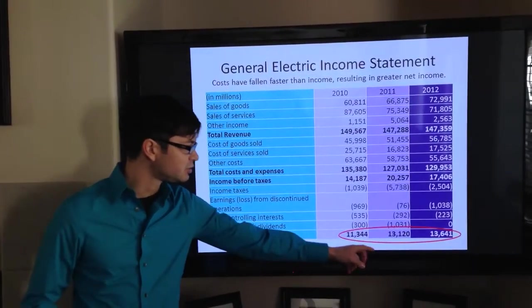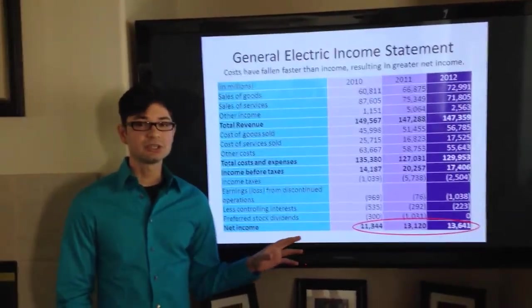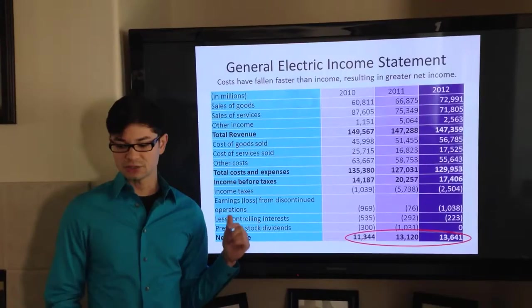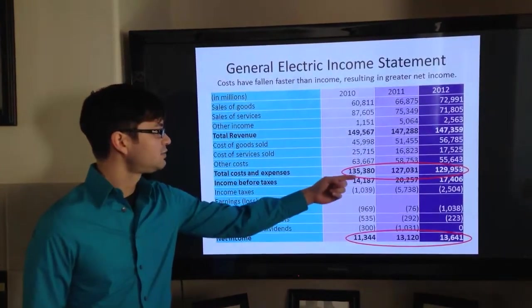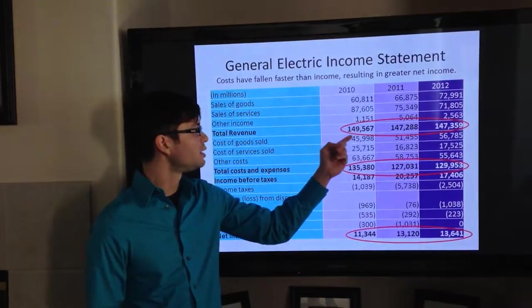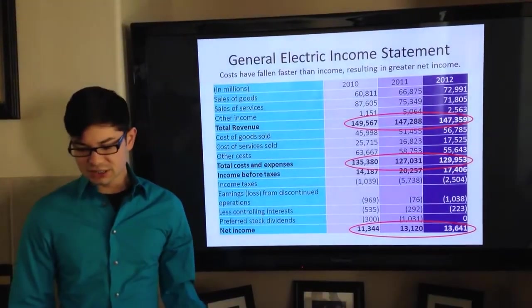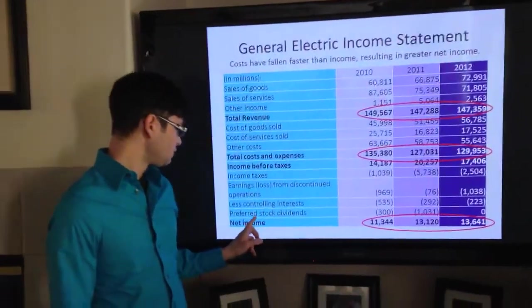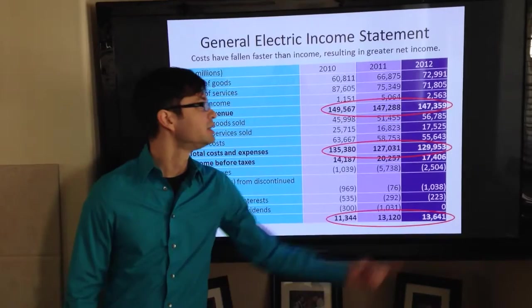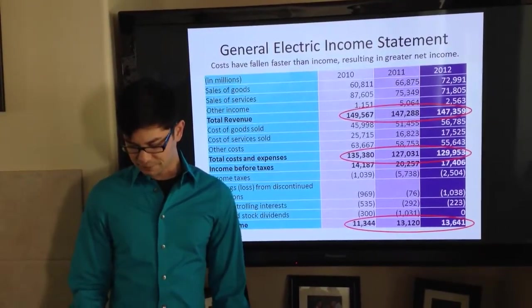As you can see, their net income actually increased to $13,641,000. This increase though was not necessarily attributed to an increase in sales. It was actually attributed to a much faster drop in total costs and expenses compared to an almost flat revenue. This along with no preferred stock dividend in 2012 actually led them to get a higher net income. If they had paid dividends, they perhaps would have had a lower net income.